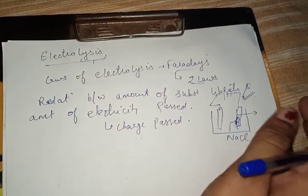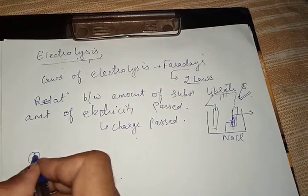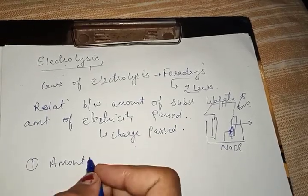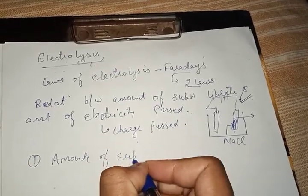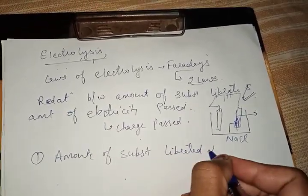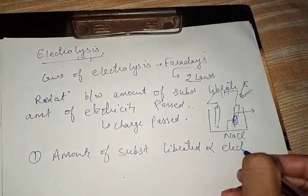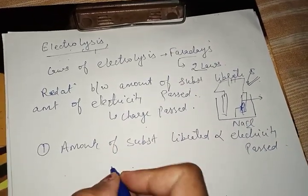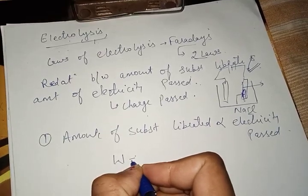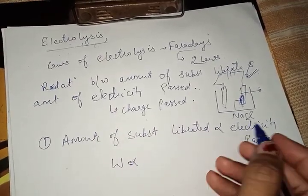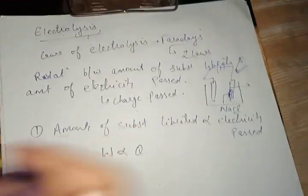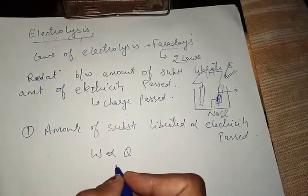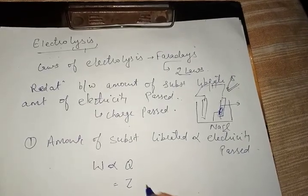Faraday's First Law states that the amount of substance deposited is directly proportional to the amount of electricity passed. The amount of substance liberated is proportional to the electricity passed. To remove this proportionality, we use a constant Z, giving us W = Z × Q.